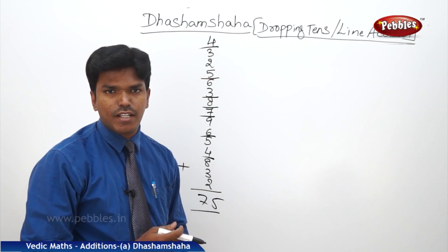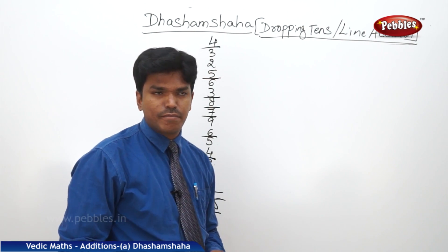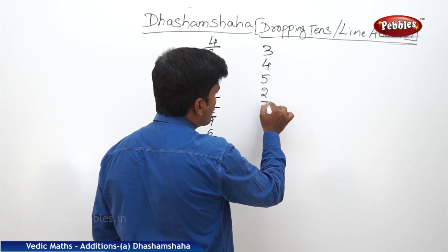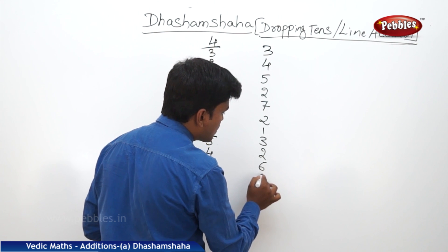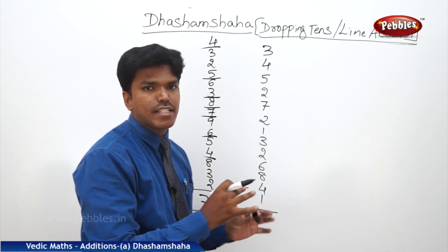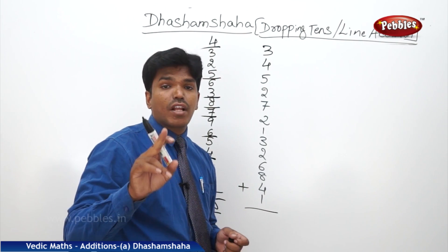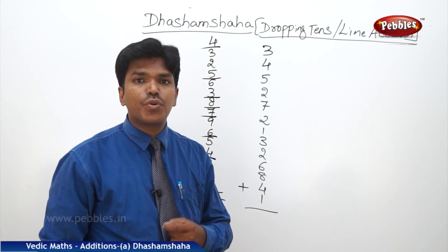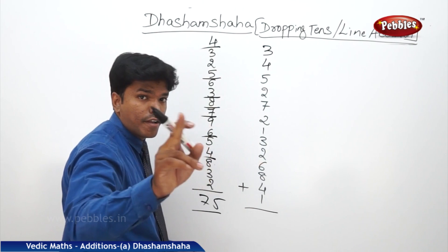Remember one thing — I'll give you one more example. Let's take one more example: 3, 4, 5, 2, 7, 2, 1, 3, 2, 6, 8, 4, 1. Now I want to add these numbers. In general you will take a lot of time to add these numbers, but by using our method we are going to do it within less time. Start from the bottom term.